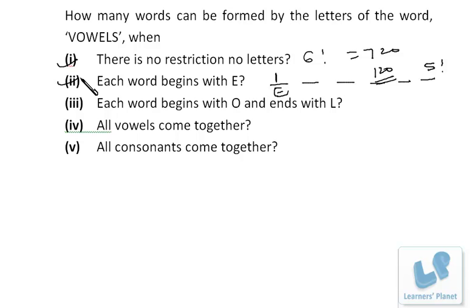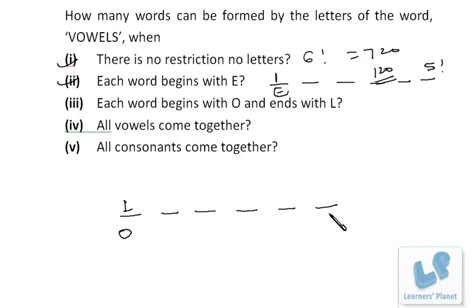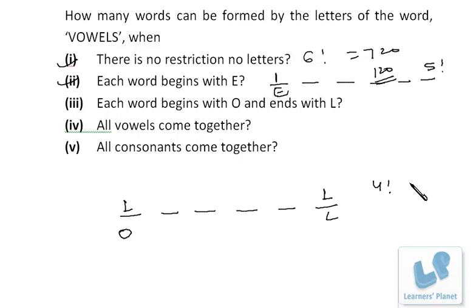The next condition: each word begins with O and ends with L. We have six places. The first place is fixed for O and the last place is fixed for L. That leaves four places and four letters in the center, which can be arranged in 4! = 24 ways.